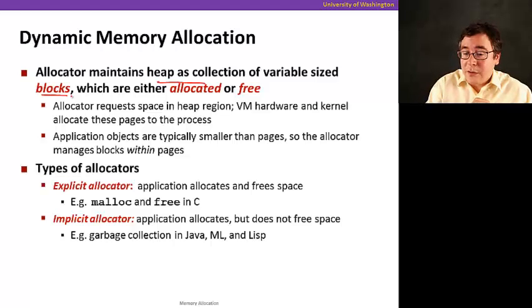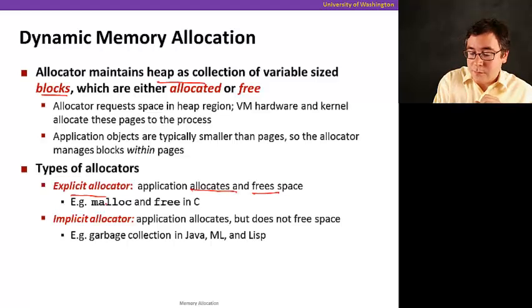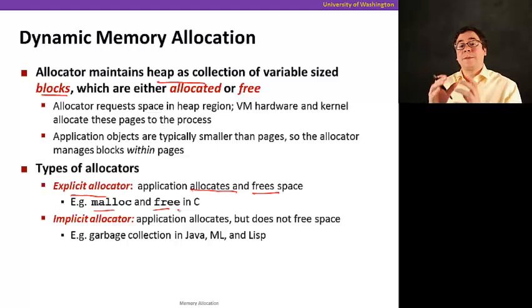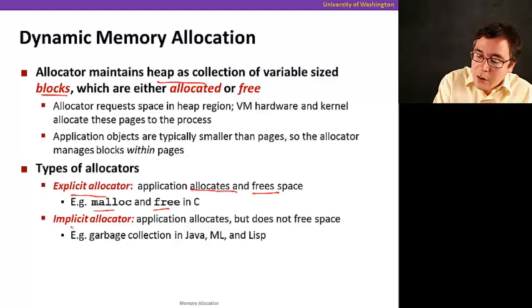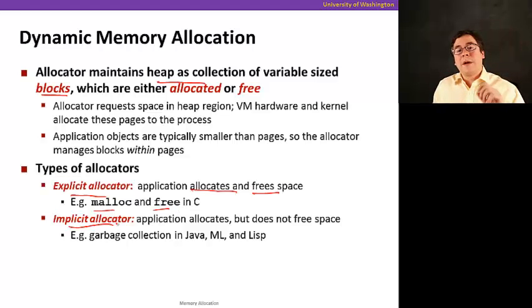So there's two basic types of allocators called the explicit allocator, where applications both allocates blocks and frees the blocks. That's what malloc and free does in C. It's explicit because the program explicitly requests and explicitly frees them. There's also something called implicit allocator. So using this allocator, the application requests memory, allocates memory, but does not free because that's done automatically. And this is what garbage collection is in, say, Java, ML, and Lisp.